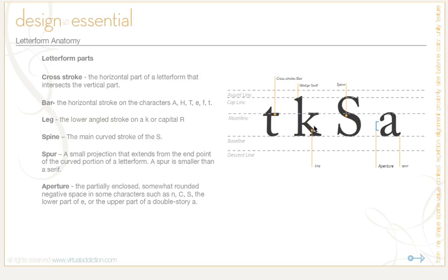The leg is the lower-angled stroke on a K or on a capital R. The spine is the curved stroke on a letter S. The spur is a small projection that extends from the endpoint of a curved portion of a letterform — the spur is always smaller than a serif. And the aperture is a partially enclosed, somewhat rounded negative space in certain characters, such as lowercase n, capital C, capital S, the lower part of an E, or the upper part of a double-story A, as shown here.